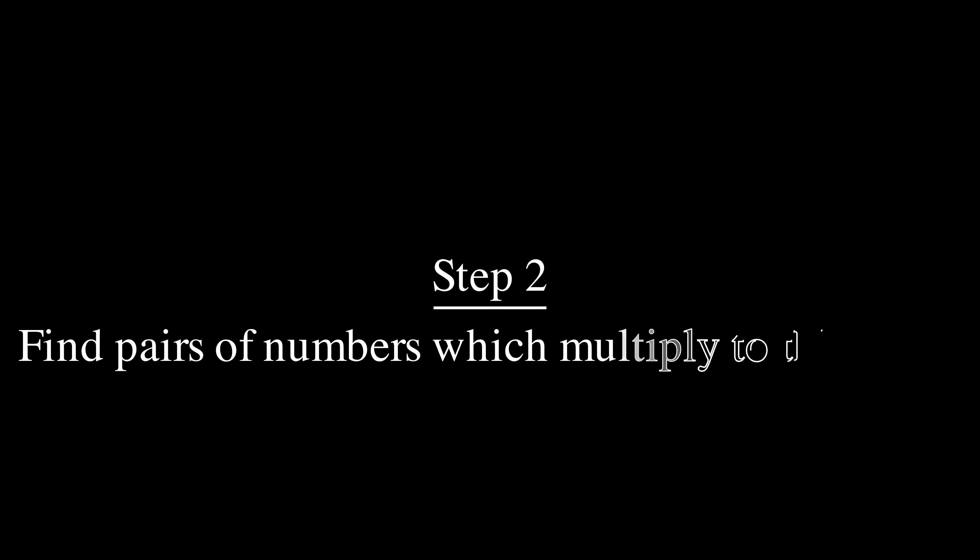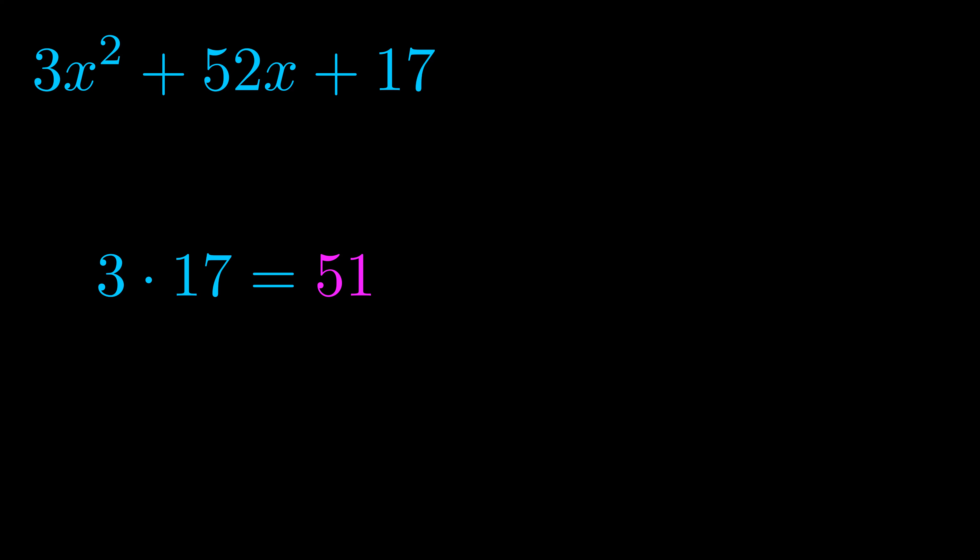Step two is to try to find all of the pairs which multiply to this number. Now it turns out you don't really need to find all of them but go ahead and write down as many numbers as you can that multiply to the magenta value for now. Pause the video and resume when you're ready to continue.